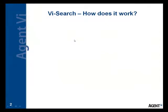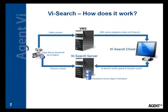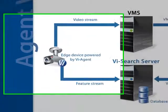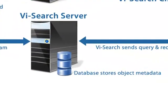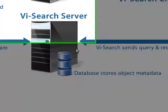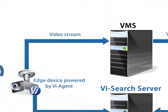VI Search consists of three main components: video indexing, a search engine, and a client application. Video indexing occurs in real time — a software component inside the camera analyzes the video feed as it is being captured. The results of this analysis are sent back to the VI Search server, which further analyzes them, turns them into a video index, and stores that index into a SQL Server database.